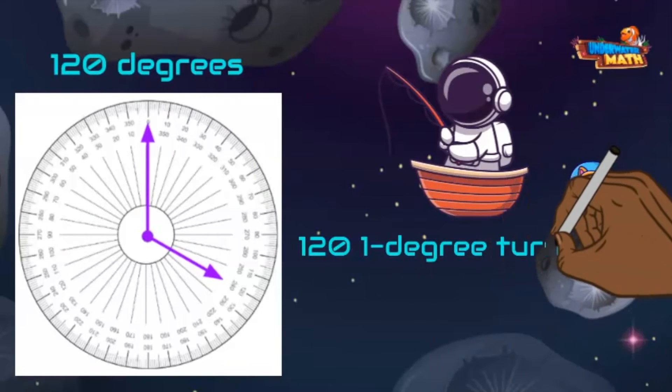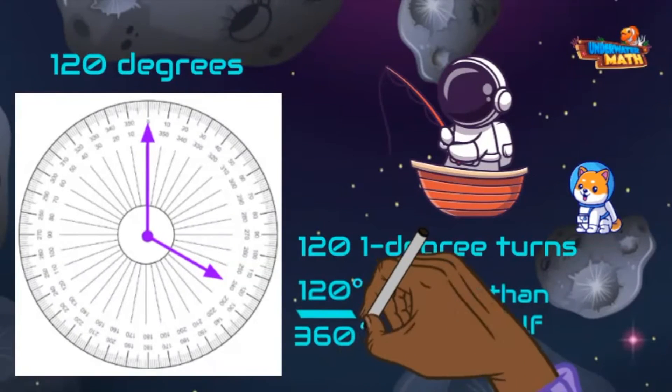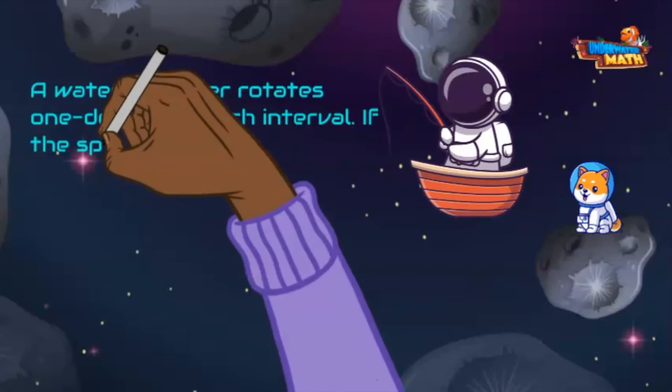Great anglin'! Check this one out. It measures 120 degrees, an obtuse angle. It has 120 one-degree turns. It is more than one-fourth of a turn but less than one-half of a turn. It looks to be one-third of a circle.